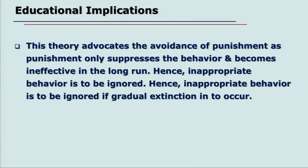This theory advocates the avoidance of punishment. Punishment tells us what is wrong, but when there is punishment, the behaviour is only suppressed within the individual. Once the punishment is removed, the behaviour expresses itself again. To ensure that negative behaviours are completely removed, we just have to ignore the behaviour that needs to be corrected. Slowly, over a period of time, when the child does not get any reinforcement for that behaviour, they stop repeating it and it will slowly die a natural death.